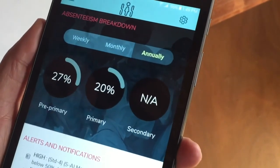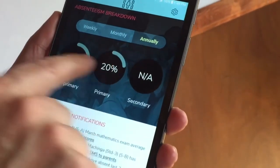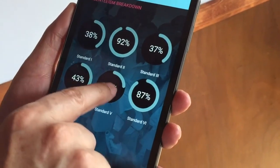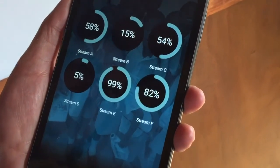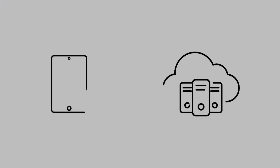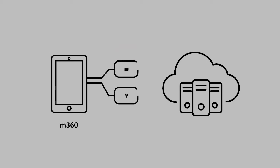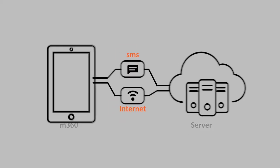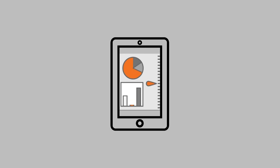Schools are empowered with real-time information through daily data capture and interactive dashboards. Once data is collected, the updated database records are sent from the tablet via SMS or internet to the server, providing school-based reporting on the tablet as well as web-based dashboards for upper-level policy and decision making.